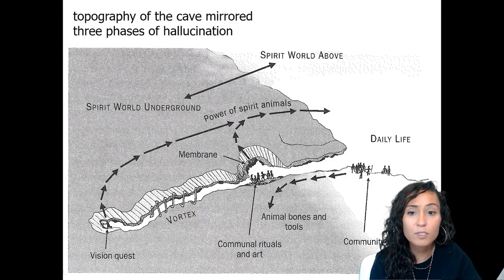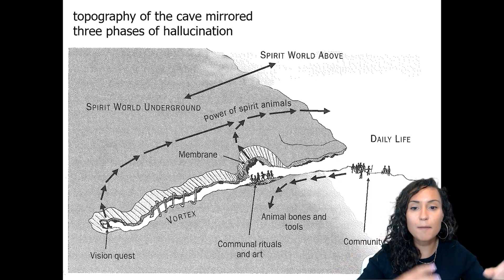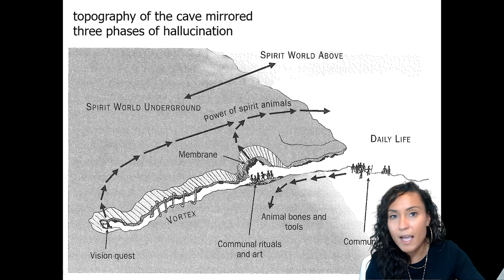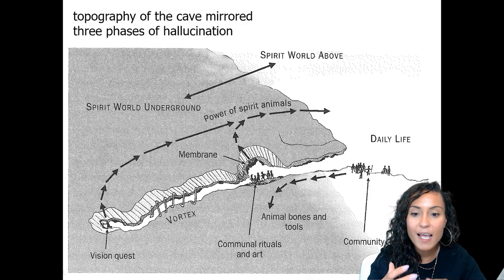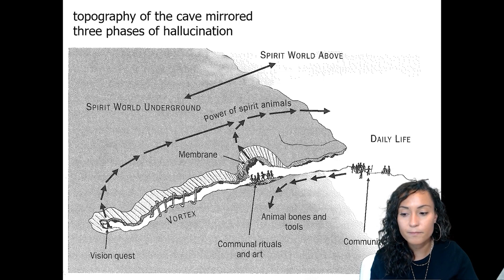According to Lewis-Williams, during the Upper Paleolithic, caves were topographically equivalent to the psychic journey to the underworld, so the cave mirrored the stages of hallucination. Outside the cave, you have daily life and waking consciousness. As you enter the cave, you enter stage one where sensory deprivation begins. Moving deeper, you enter stage two in which the shaman begins to construe figures from abstract shapes. Finally, in the deepest, darkest recesses — where the Sorcerer and Venus images are located — the shaman begins to hallucinate about the spiritual world in full.